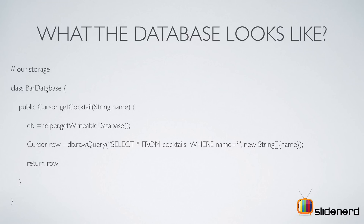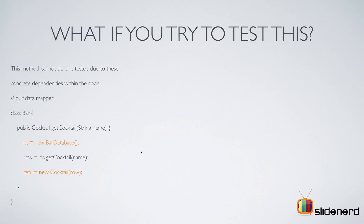Let's say your BarDatabase class has the getCocktail method, which takes a name, opens the SQLite connection, and returns the cursor object. Now this is a bad idea. The two problematic statements are: where you say db = new BarDatabase, and where you say return new CocktailRow. You're constructing both these objects right there inside the method.